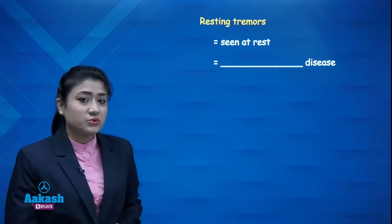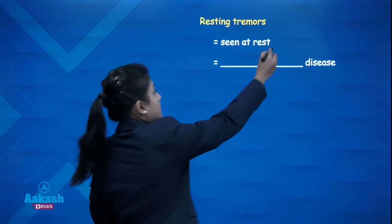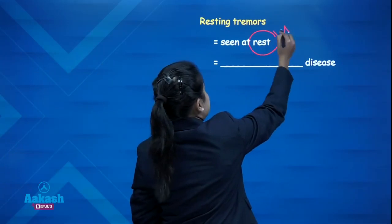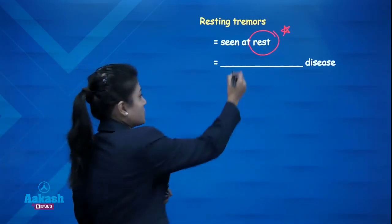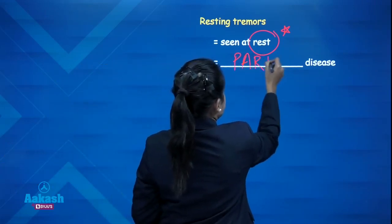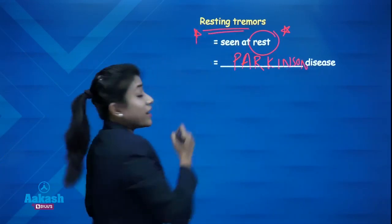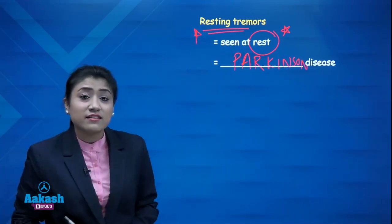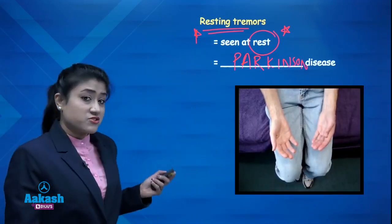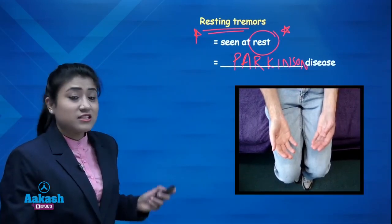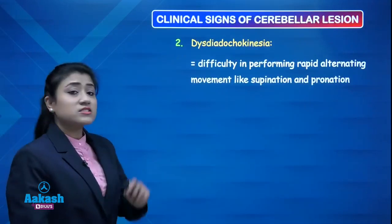Another tremor you should know is resting tremors. Resting tremors are seen at rest and are seen in Parkinson's disease. In Parkinson's disease you get resting tremors, while intention tremors are seen in cerebellar lesion. You can see that the patient is at rest and still having tremors — such tremors are resting tremors.